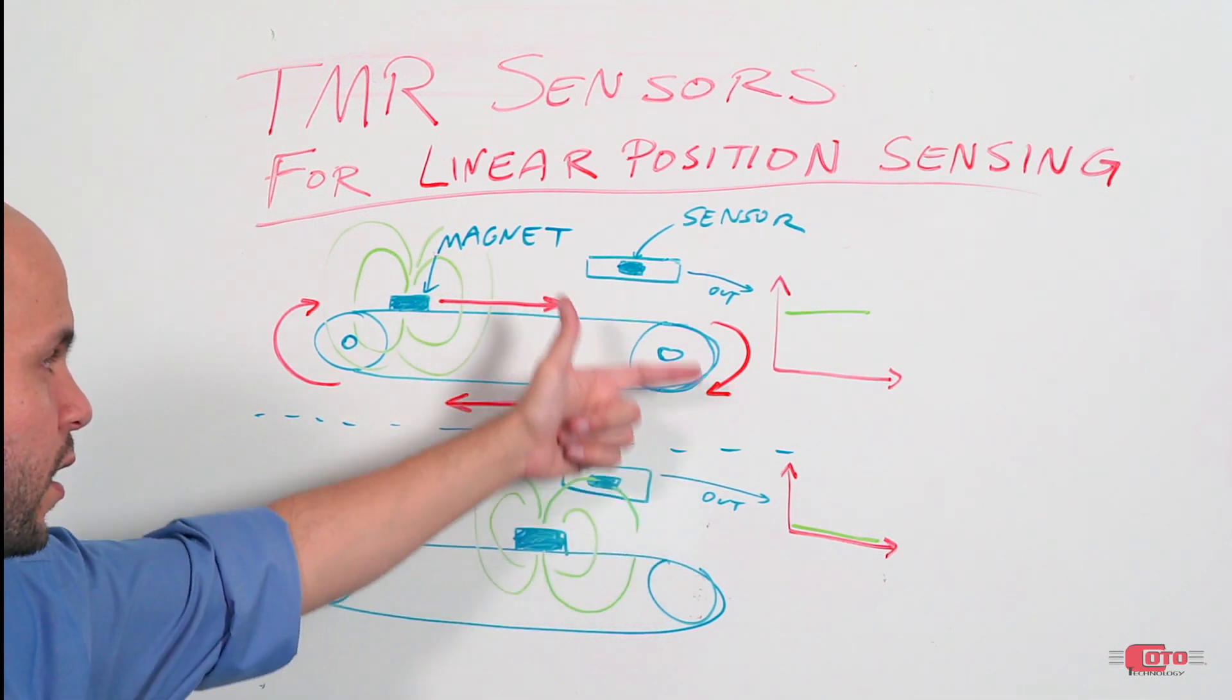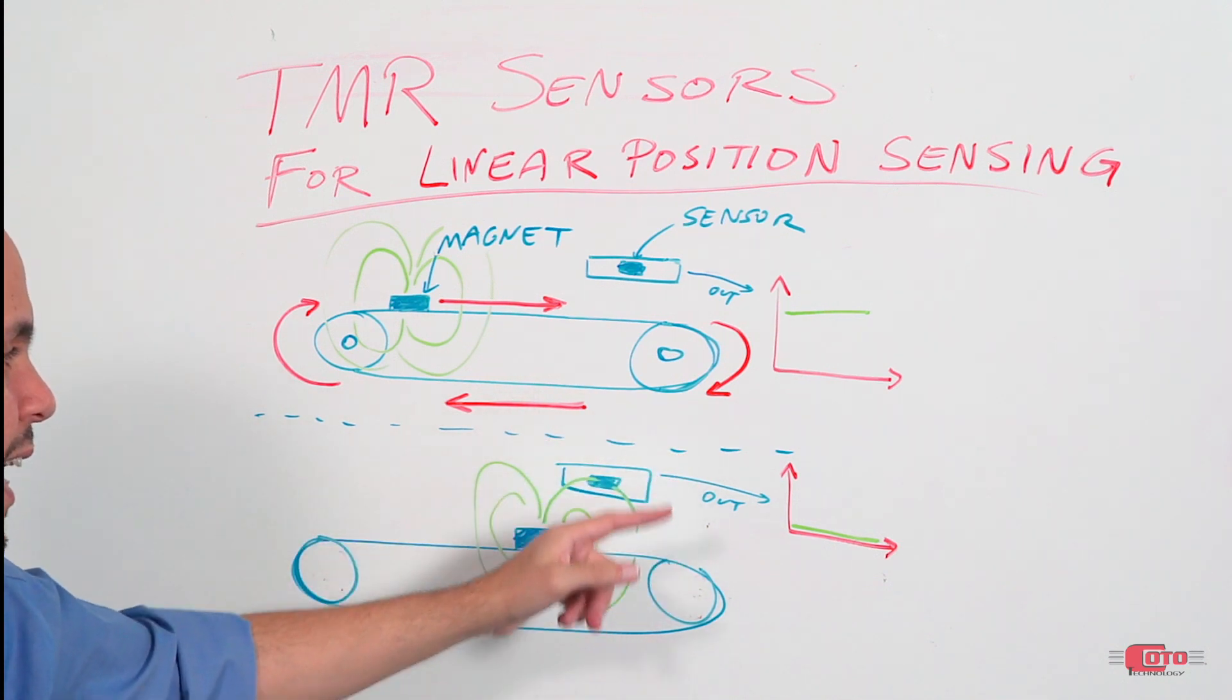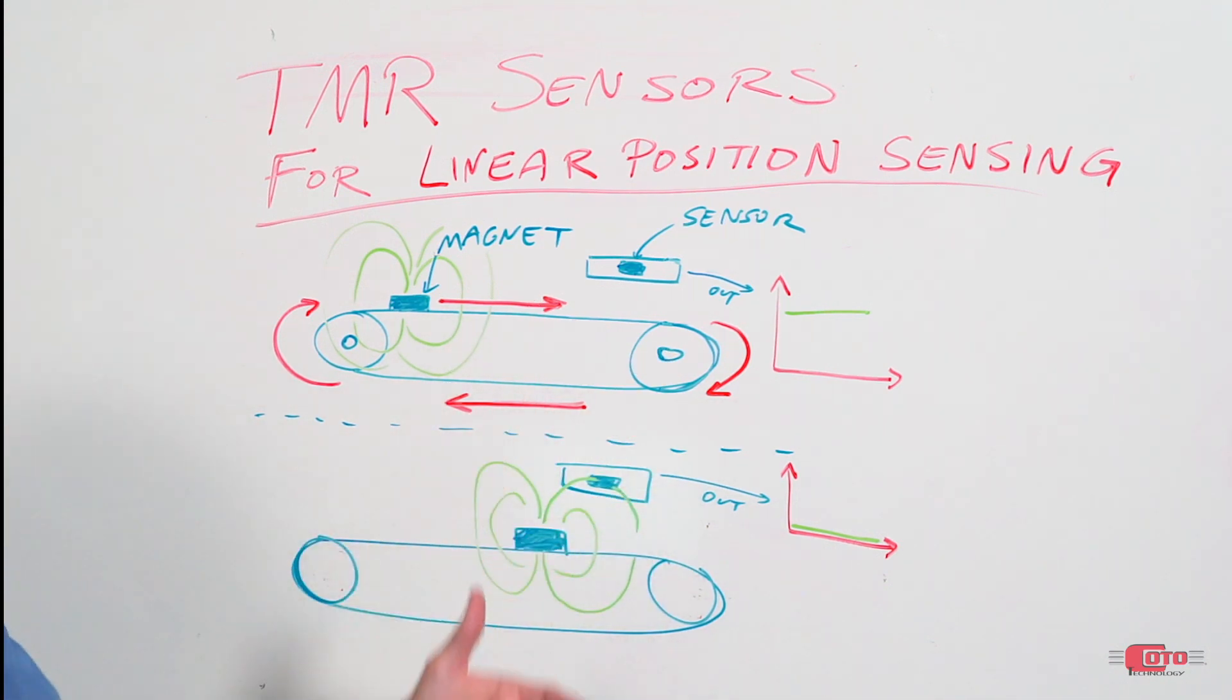the output signal of the TMR sensor will change, and this change in the output of the TMR sensor will be used as feedback to stop the motor momentarily.